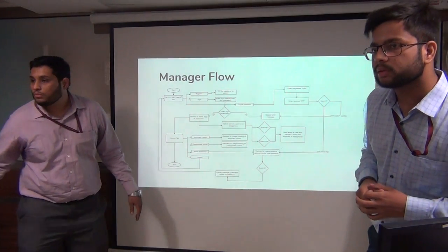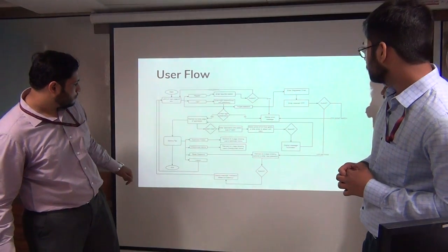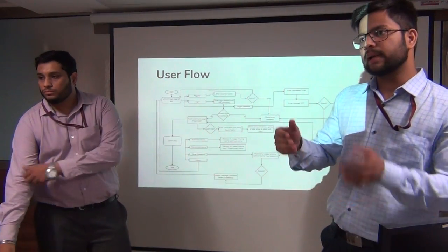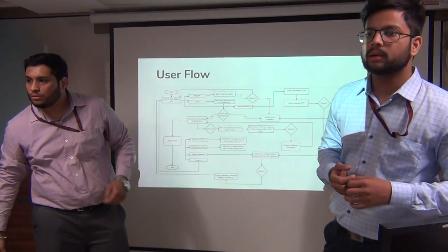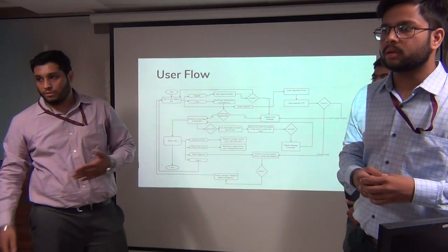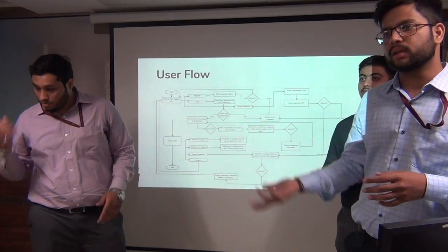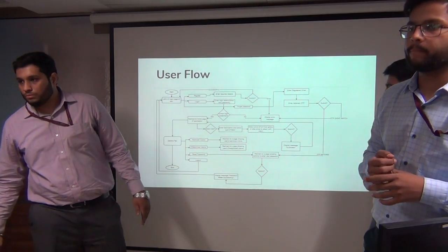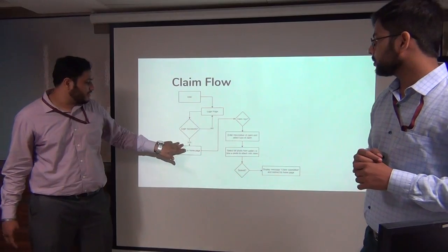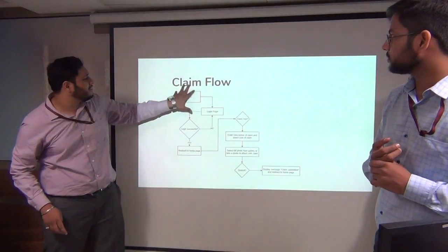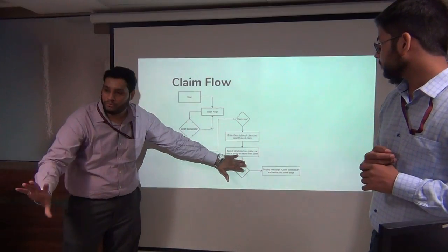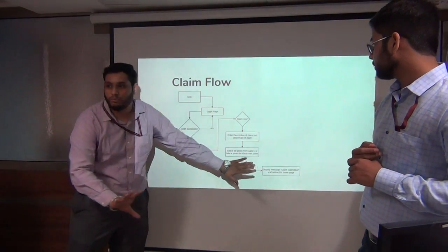For the photo, there are both options: you can take a photograph at that instant, or select one already taken previously from the gallery. To send the photograph data, we convert it to base64 and then send it and store it in the bill details. This is the simple flow of how the claim is submitted: claim now, enter the description, submit the photo from camera or gallery, submit, then display error or success message, and redirect to the home page.